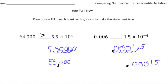The second problem compares 6 thousandths with 1.5 times 10 to the negative 4th power. When I converted 1.5 times 10 to the negative 4th to standard form, I ended up with 15 hundred-thousandths. And 15 hundred-thousandths is definitely smaller than 6 thousandths, so the inequality sign faces this way as well. Alright, how'd you do?